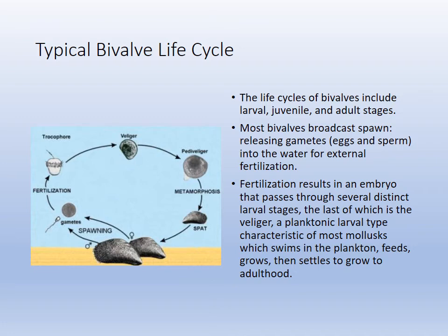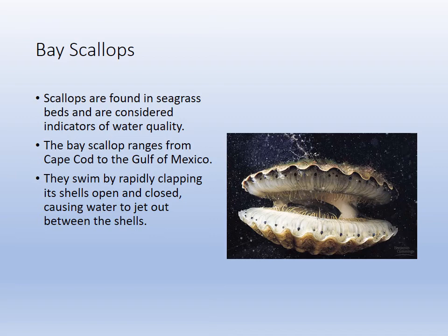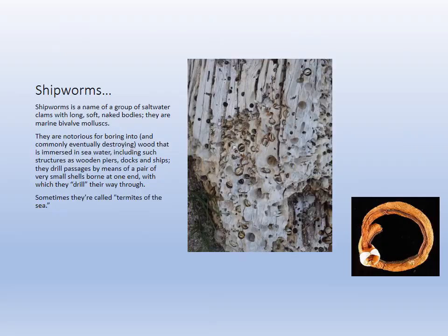Bivalves and most mollusks have broadcast fertilization, producing a trochophore larva that is ciliated. It grows from veliger to spat — a tiny planktonic mini-bivalve — and when it gets larger, it settles into a benthic lifestyle. Bay scallops are that indicator species we've mentioned. We've also seen images of bay scallops with their cool blue eyes from Fort DeSoto.